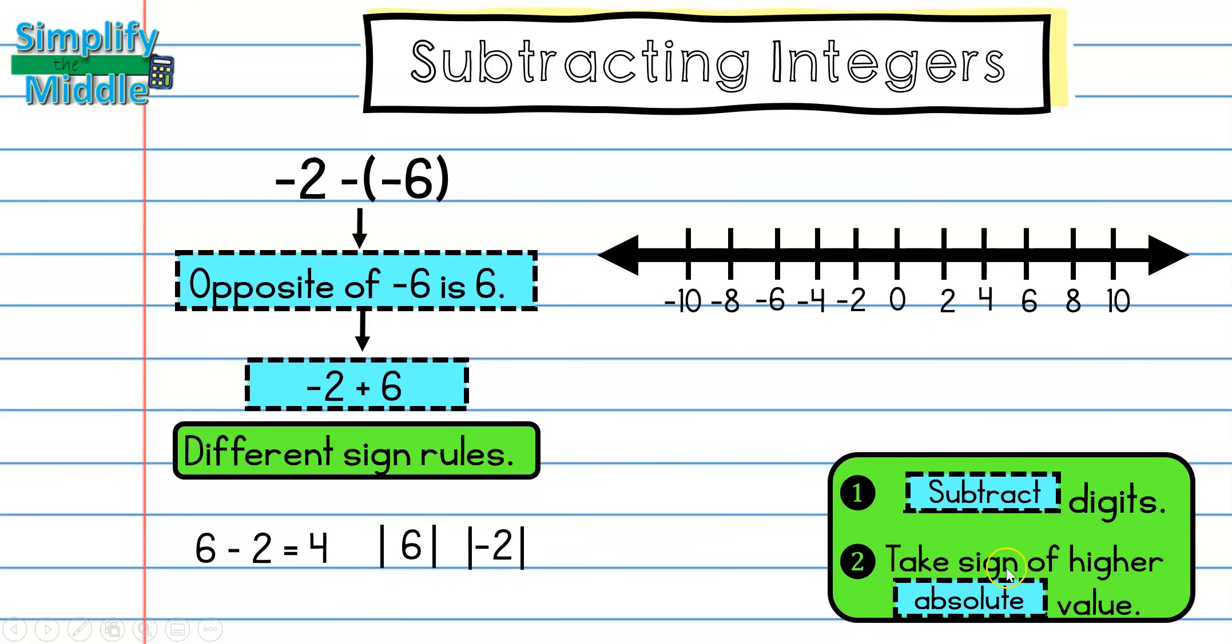And then I'm going to have to take the sign of the higher absolute value. Is the distance from 6 to 0 bigger, or is the distance from negative 2 to 0 bigger? Well, I know that the distance from 6 to 0 is bigger. So because this one is the bigger one and in this problem right here it was positive, my answer would be positive. And then I can just plug it into the original problem. So negative 2 minus negative 6 is equal to positive 4.